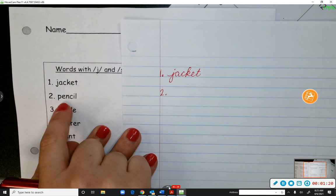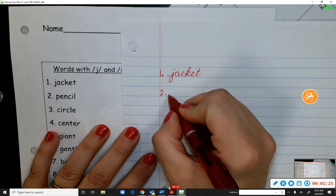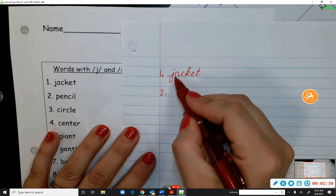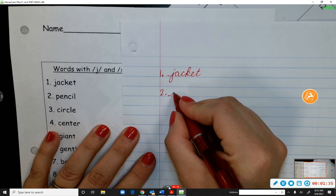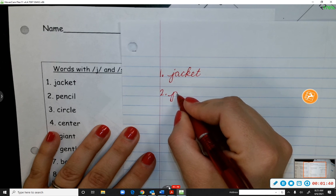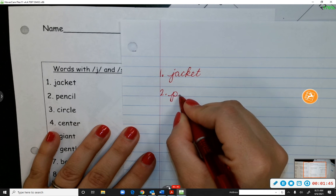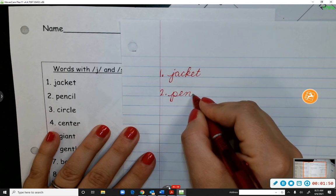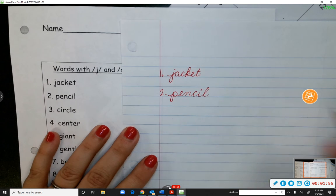Number two is pencil. So we hear that S sound. P is just like the J, except when you get to this part right here, you make a loop to make the P. So we make a handle, go back down, circle towards the front of the letter, and then make your loop. Okay? Then I'm going to keep going to connect with an E. So E, N, C, I, L. Pencil.